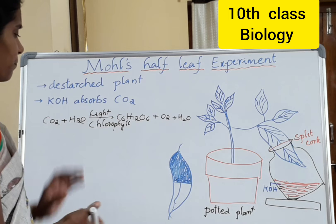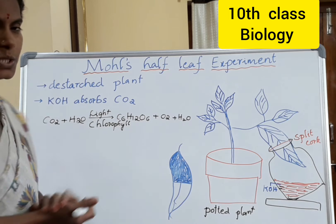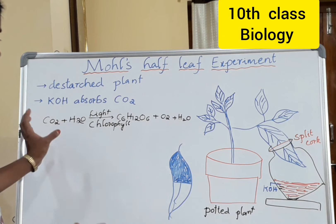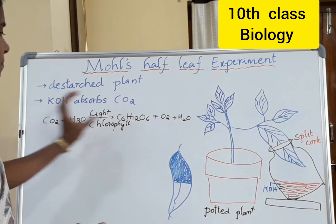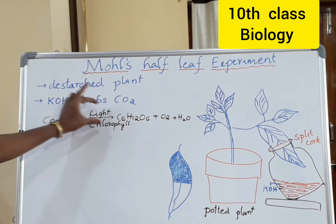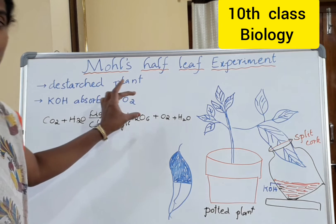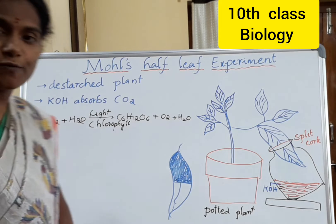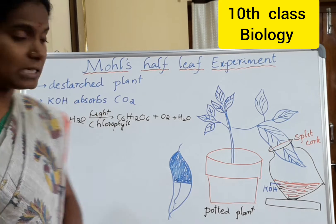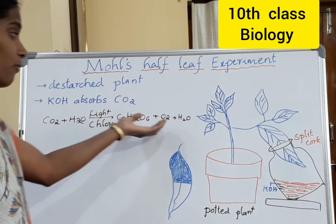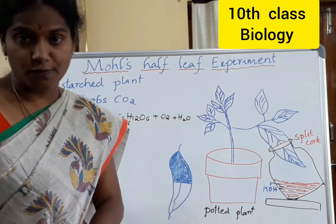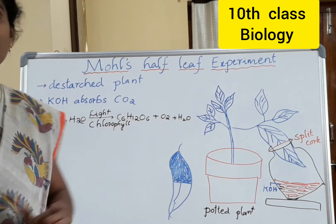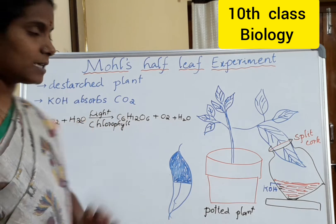Now here, in this chapter we have to prove each and every factor with experiments — how light is important for photosynthesis, how CO2 is important for photosynthesis. So how will you prove that CO2 is required during photosynthesis, and how starch is produced during photosynthesis?